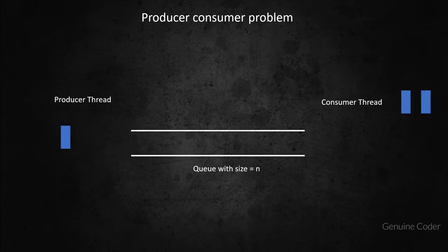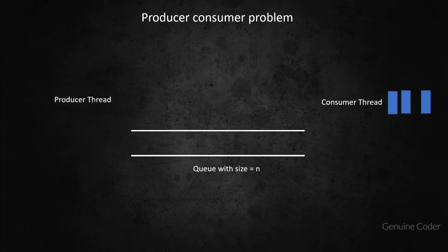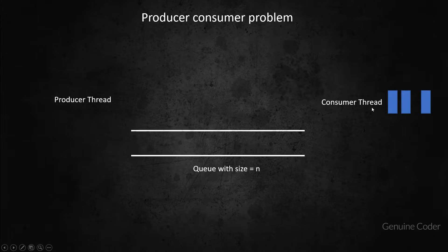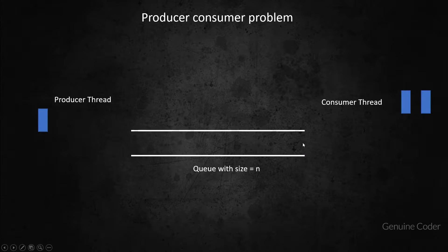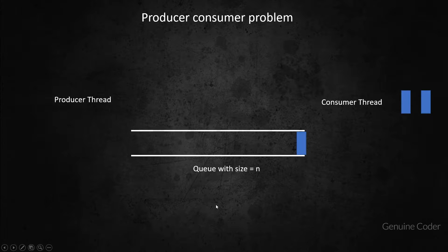Now the queue became empty, the producer will create one more item, then the consumer will see that there is one more item in the queue and it will take it. The main important thing of synchronization here is the boundary condition: the producer must not produce when the queue is full, and the consumer must not try to take something when the queue is empty. Let us see how we can implement this in our Java program.